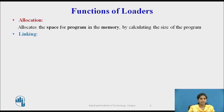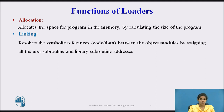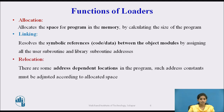The second function is linking, which combines two or more separate object programs and supplies the necessary information. It resolves the symbolic references, either code or data, between the object modules by assigning all the user subroutine and the library subroutine addresses, and this activity is called linking. The third is relocation — it modifies the object program by changing certain instructions so that it can be loaded at different addresses from the location originally specified. There are some address-dependent locations present in the program.